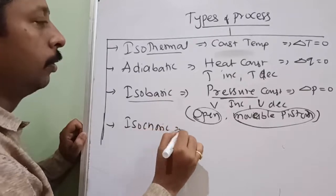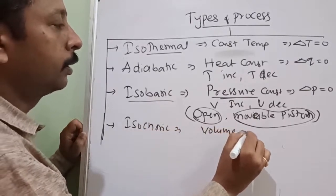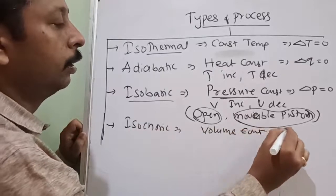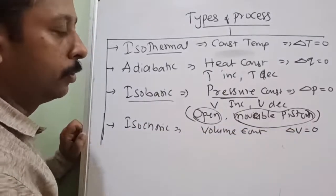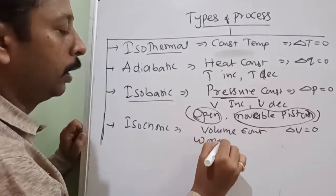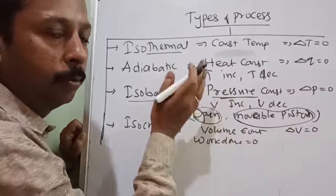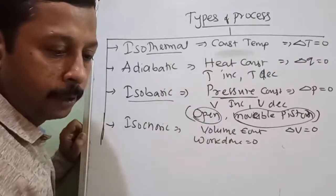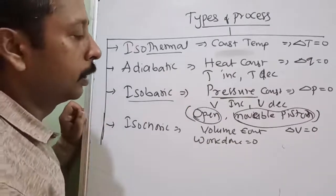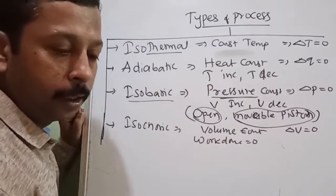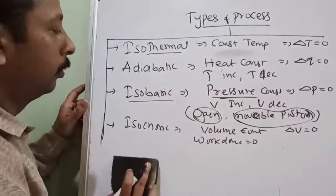Isochoric: volume is constant — delta V equals zero. Because there is no moving up or down, therefore it is isochoric. In an isochoric process, volume is also constant, and work done will also be zero.